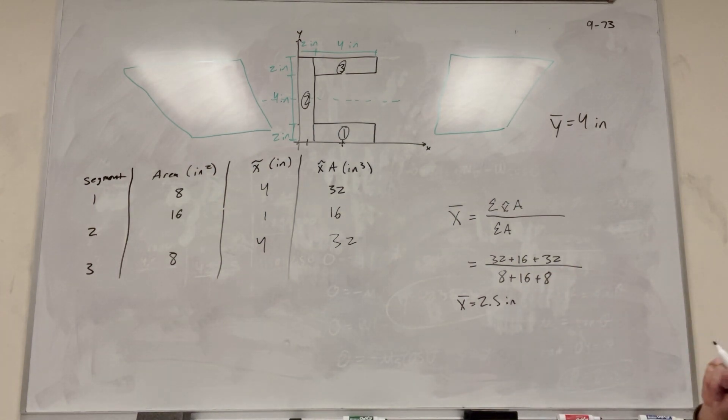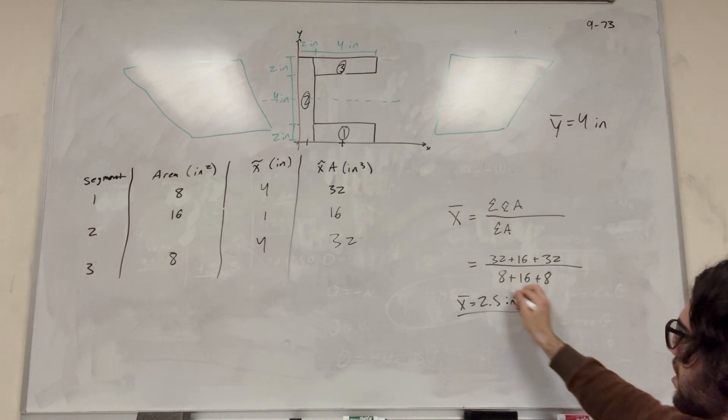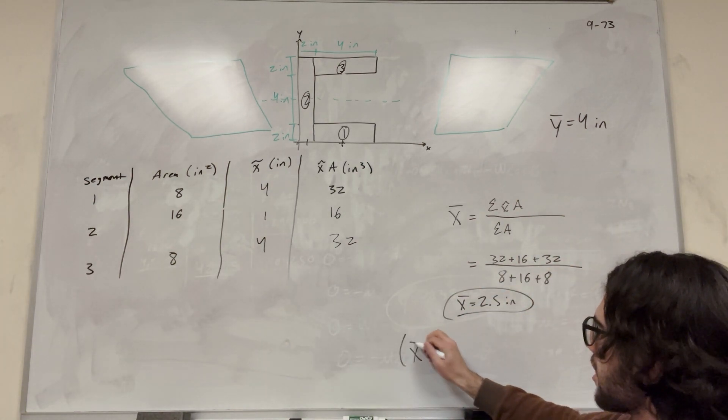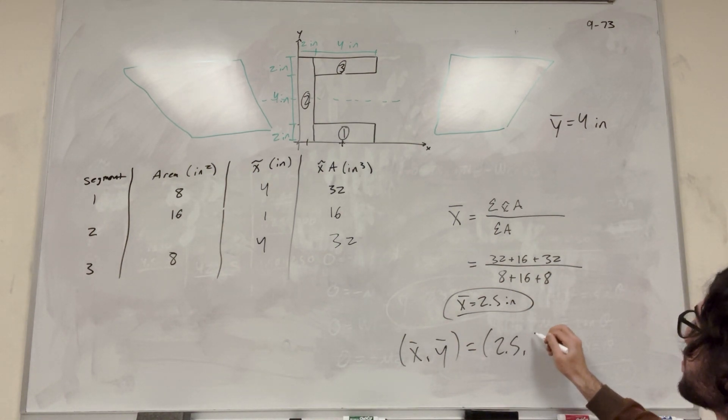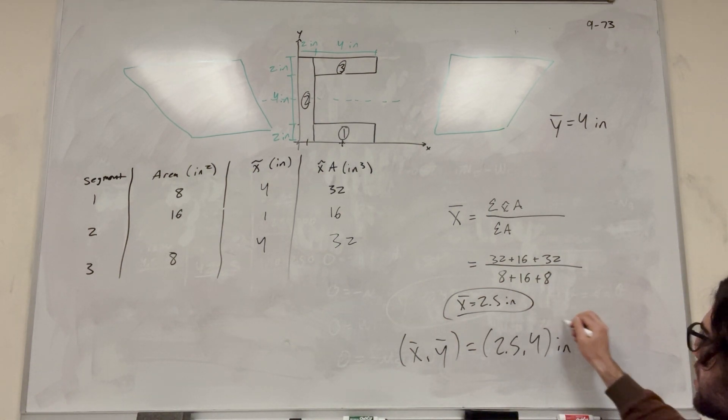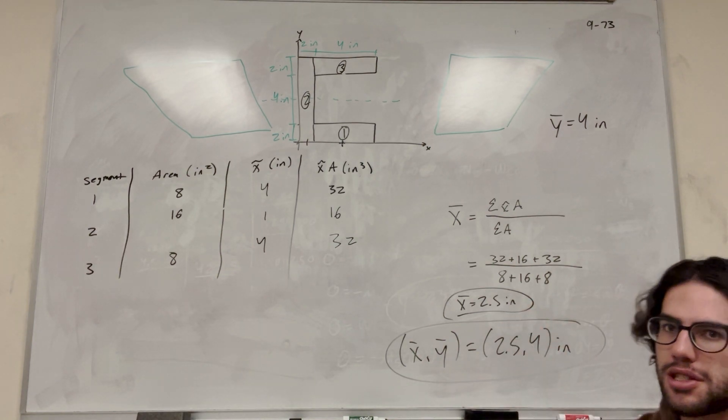Cool. So we have x bar is 2.5 inches. Y bar is that. So we can write it x bar, y bar, however you want to write it. 2.5, 4 inches. There you go. So that's how you solve this problem.